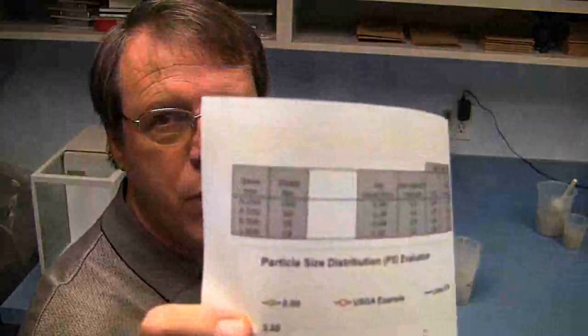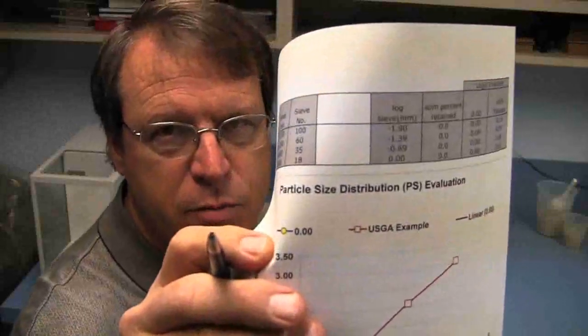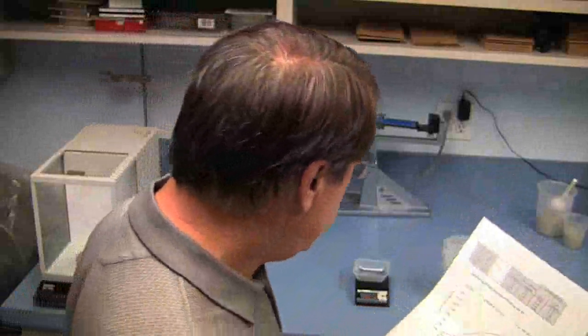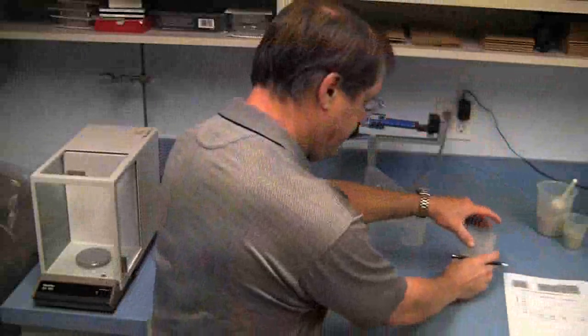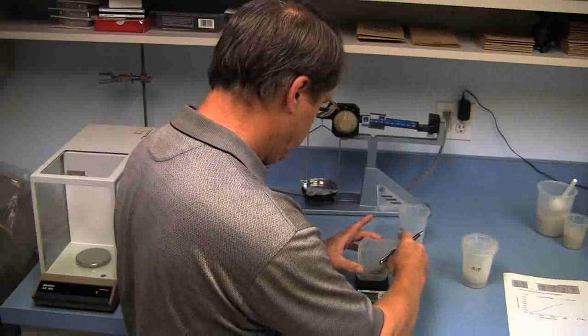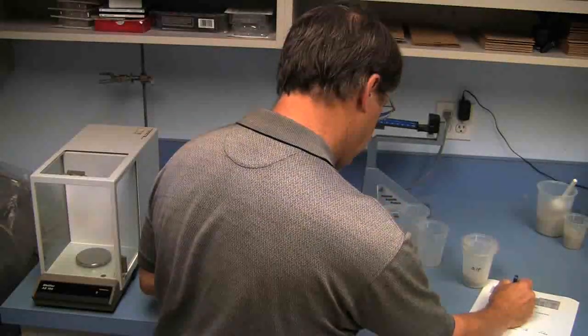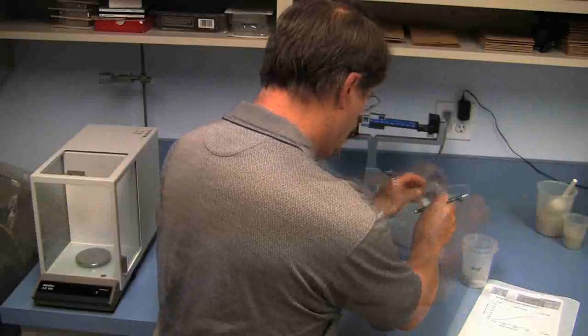So now we're going to weigh and record the values. I'm using a printout from the spreadsheet that's provided. A link's provided in this update so that you can just write the numbers down on here and then enter them into the computer to give you a good QC value. So we'll weigh each one of the sieves from the 0.15, 0.25, 0.5 and 1 millimeter samples. Okay, it's easy as that, now let's plug the numbers into the spreadsheet and see what we come up with.